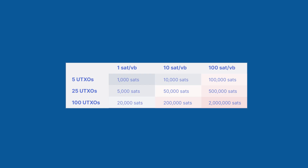The most costly predicament to be in is if you have a lot of UTXOs that you need to move on short notice while the fee environment is extremely high. Regardless of the amount of Bitcoin you are moving, fees can vary by a staggering amount. If you have Bitcoin in the form of 100 UTXOs and are forced to send it when fees are high, it might cost you 2,000 times more than if you sent the same amount when fee rates are low and in just the form of 5 UTXOs.